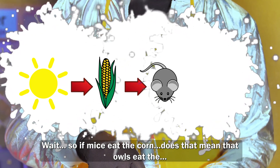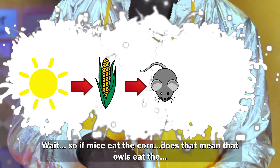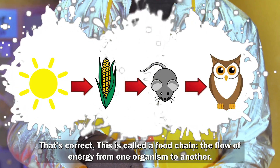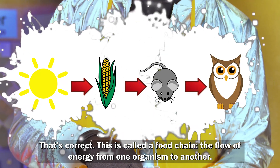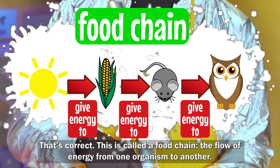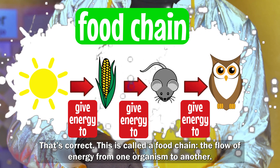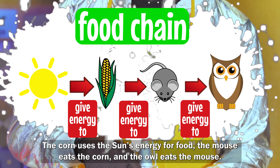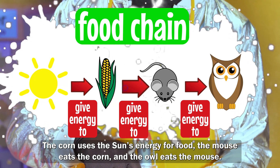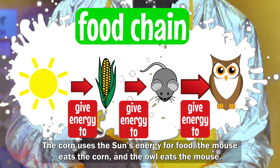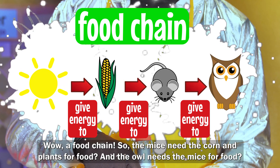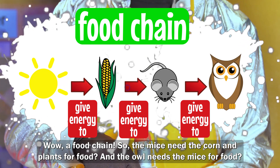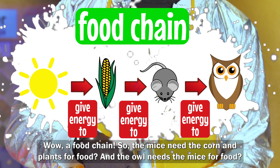Wait, so if mice eat the corn, does that mean owls eat the mice? That's correct! This is called a food chain — the flow of energy from one organism to another. The corn uses the sun's energy for food, the mouse eats the corn, and the owl eats the mouse. Wow, a food chain!